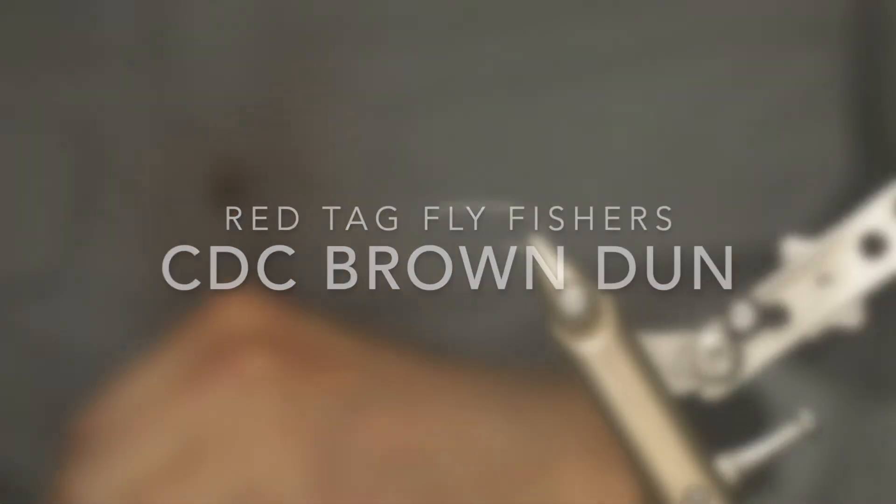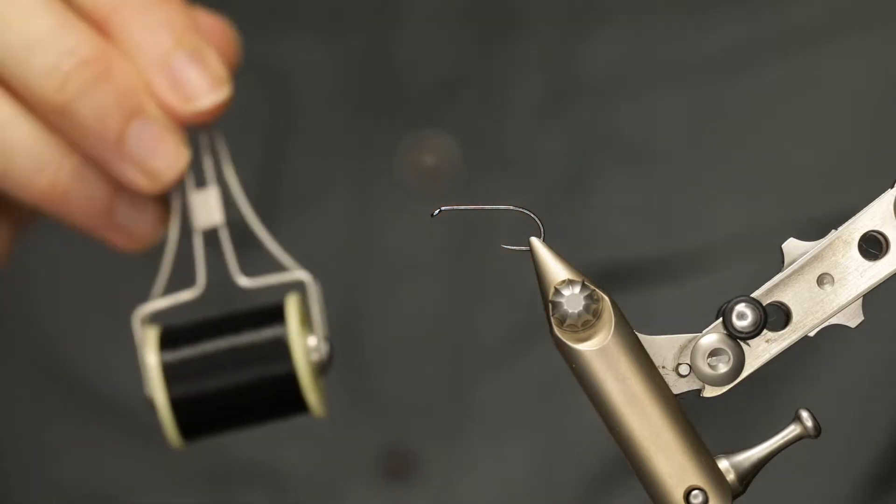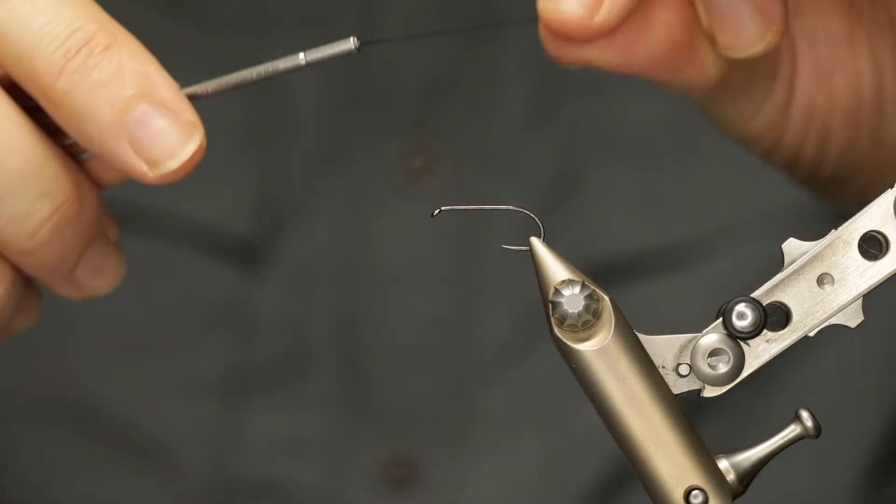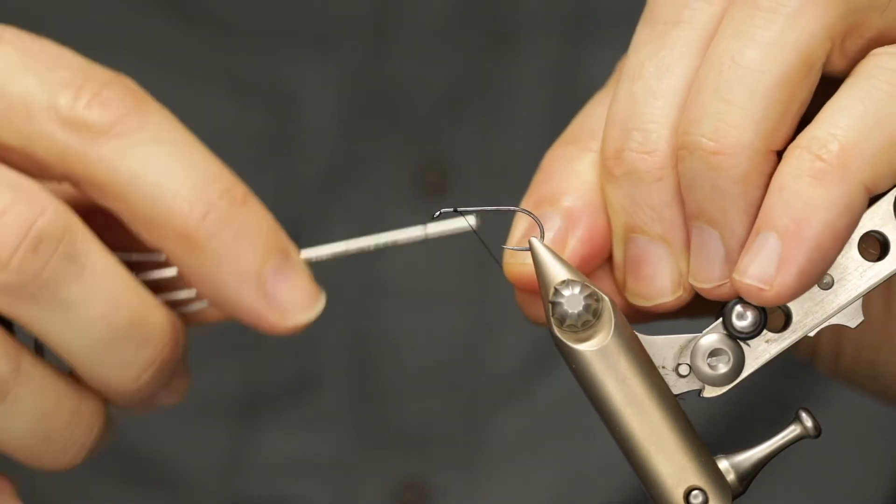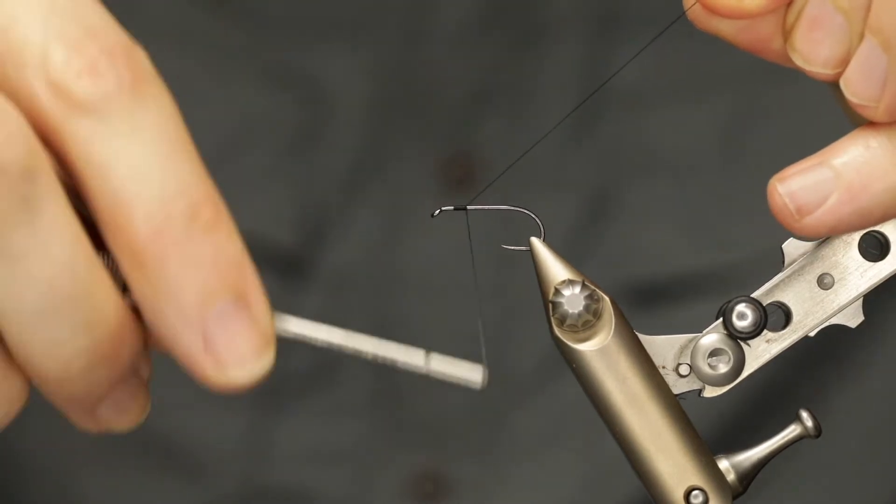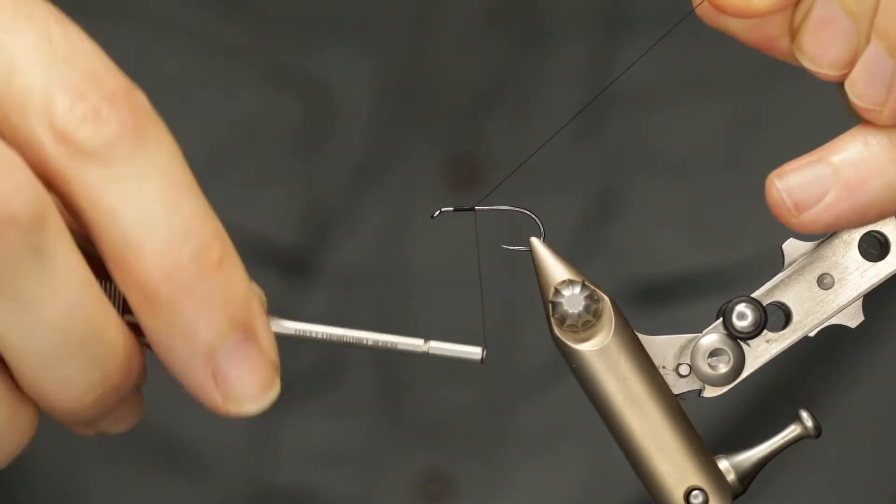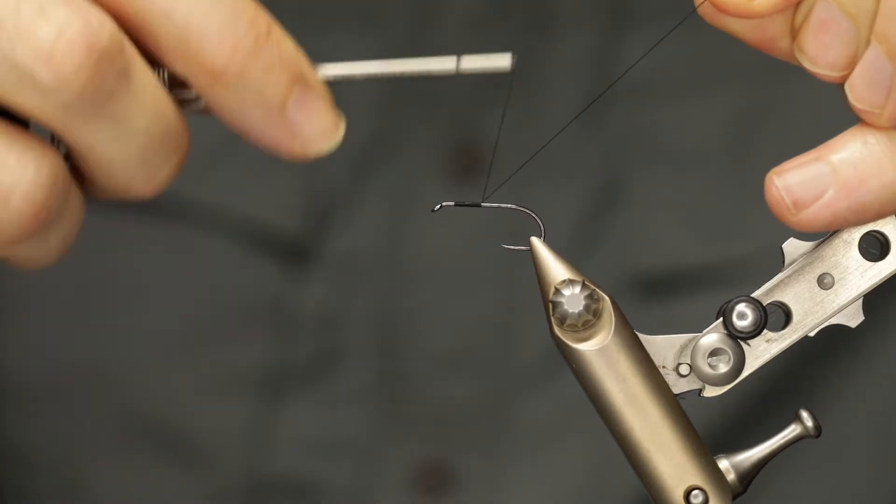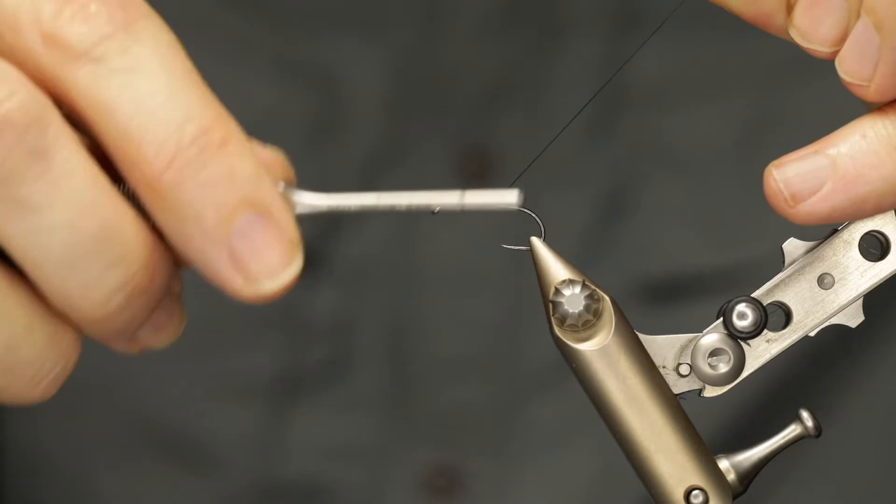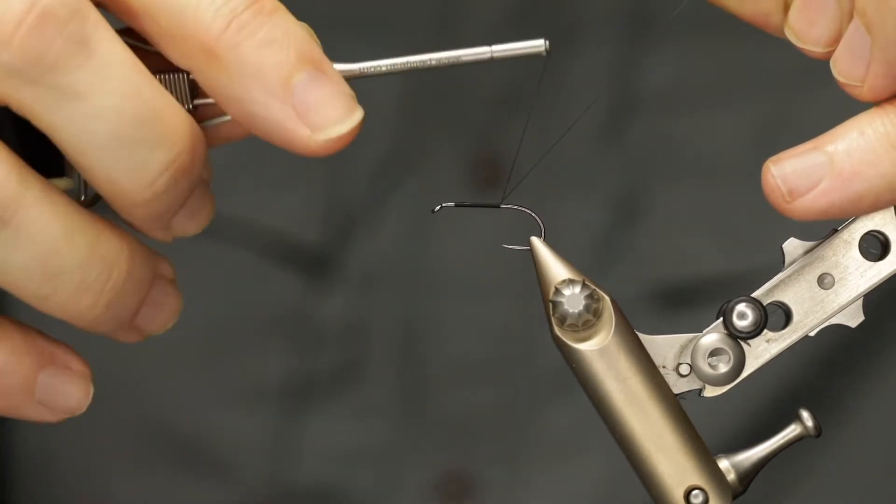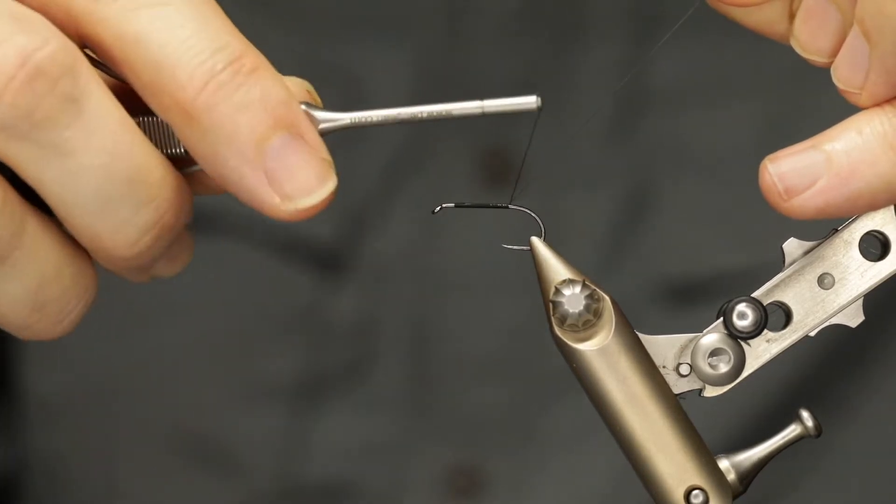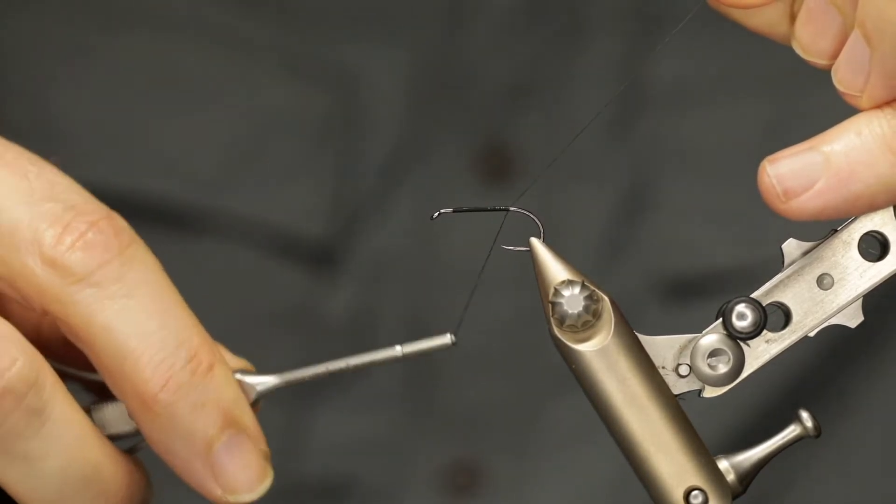Welcome to another Red Tag fly tying video. Today we're going to be starting with some black thread, starting that a couple of millimeters behind the eye, working our way back towards the rear of the hook and the bend of the hook. Use the excess thread to control your thread wraps just to get a nice clean wrapping of thread from the start of the fly to the tail of the fly.